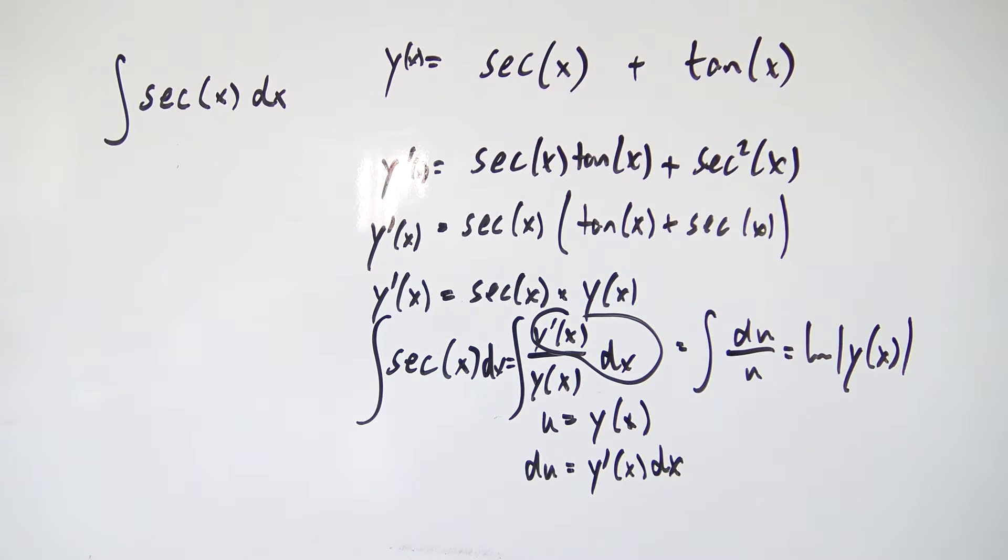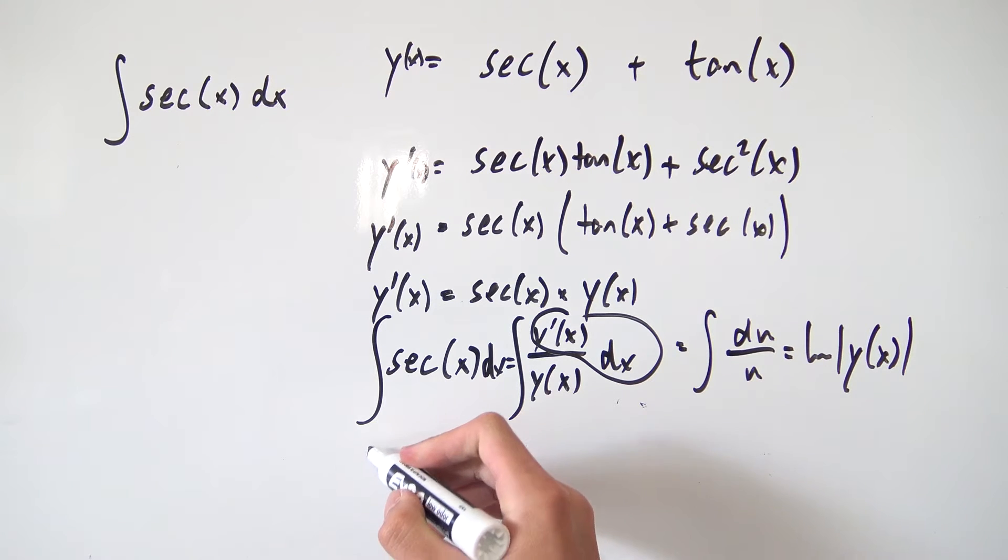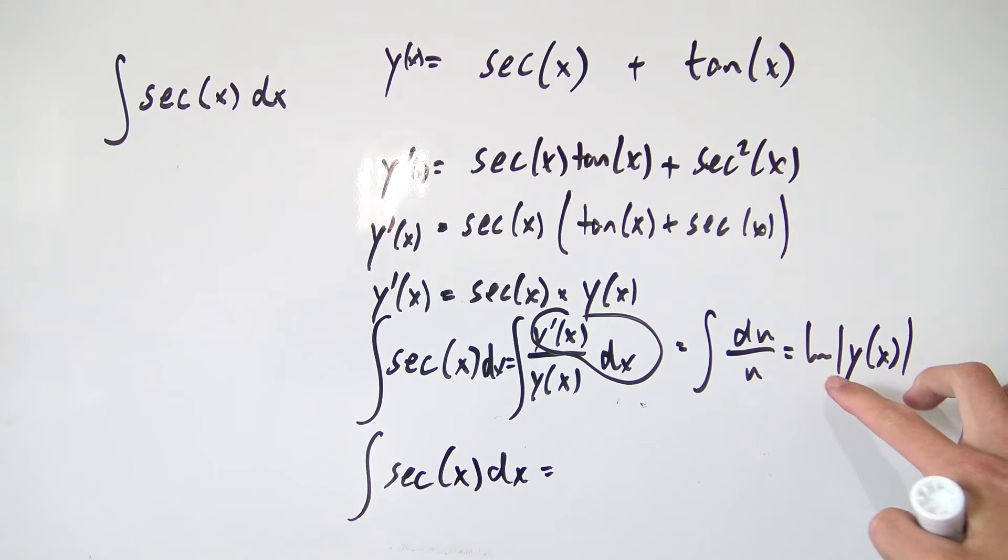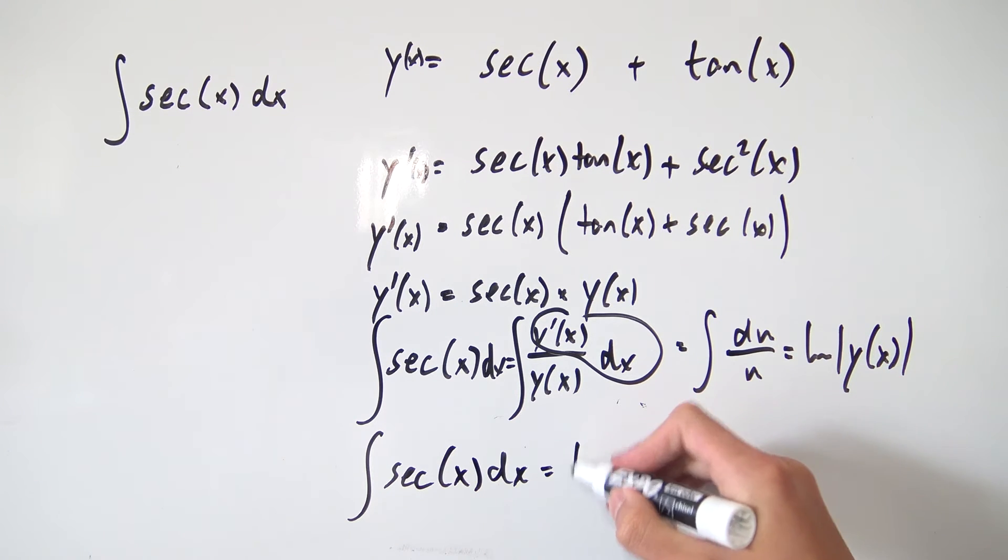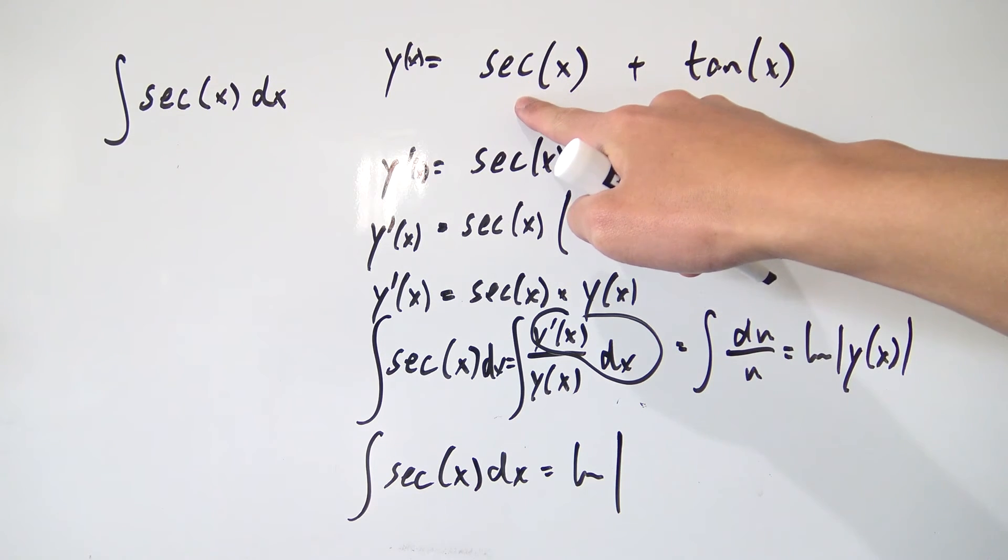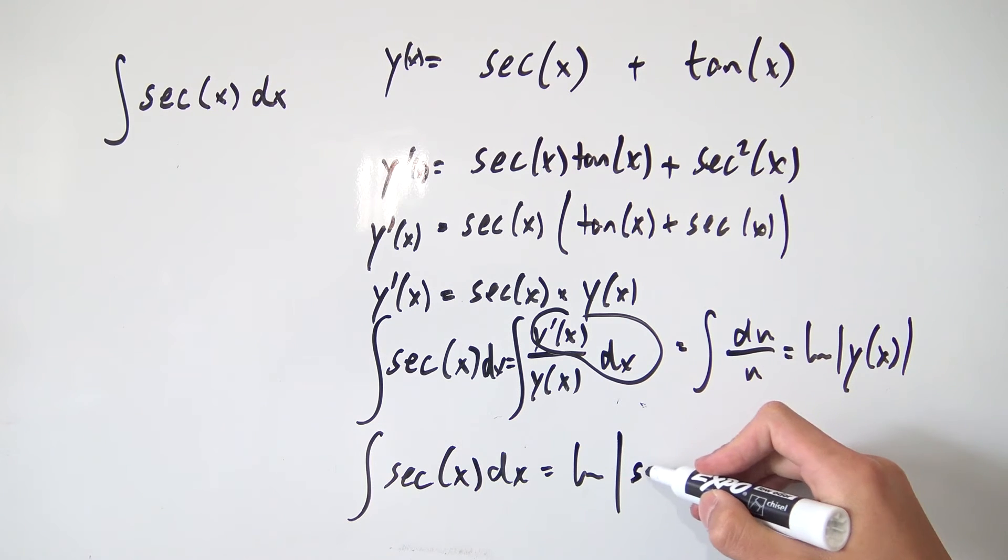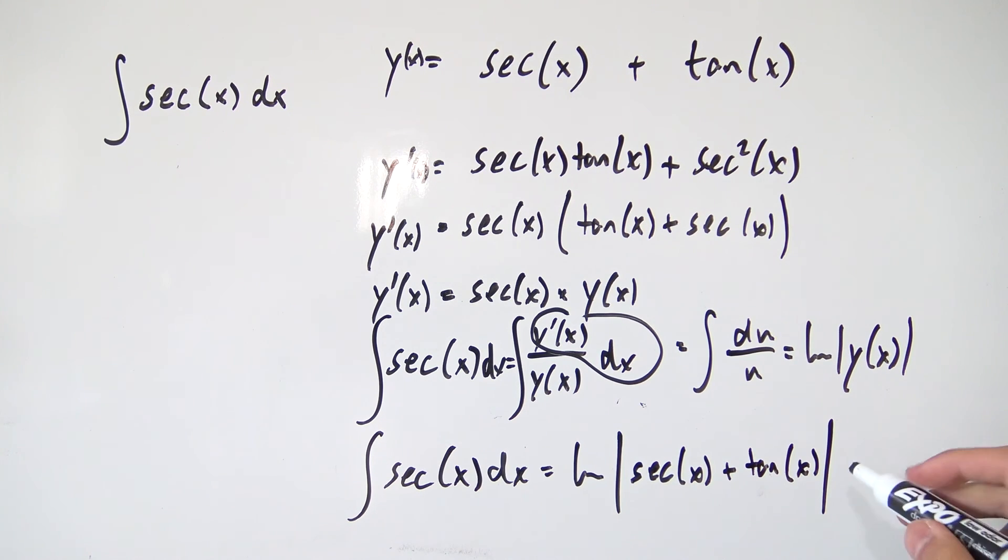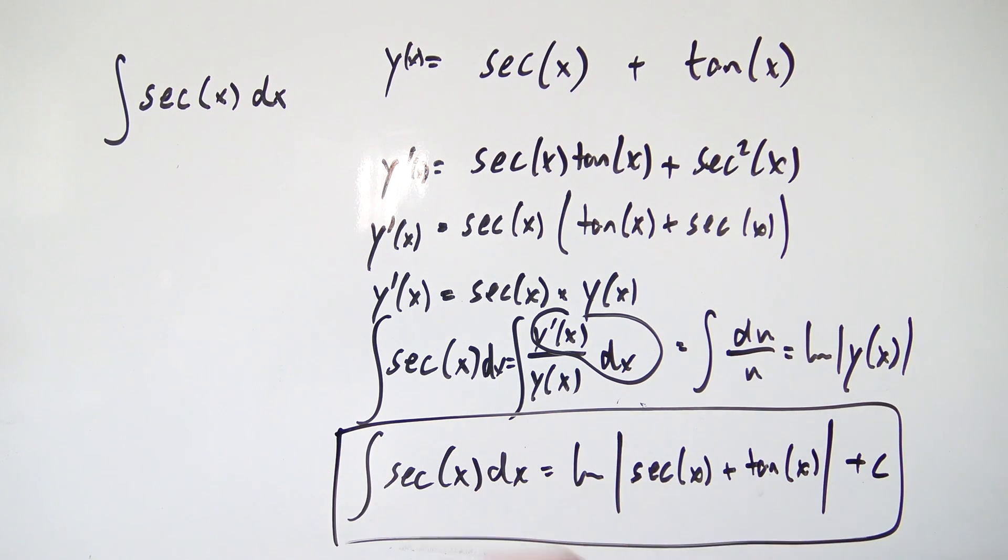So what did we just find right here? We found that the integral of the secant of x dx evaluates to the natural log of y right here. So the natural log of the absolute value of y. But what exactly is y? Remember we said y was secant of x plus tangent of x. So you have secant of x plus the tangent of x. And then we're done. So just put down a plus c. And that is the answer for our integral.